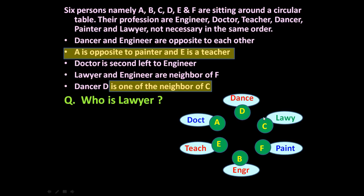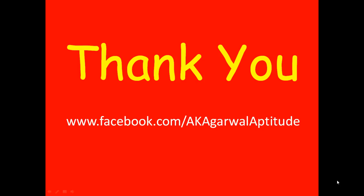The given question is: who is lawyer? It is C. Now friends, once this tabular arrangement is completed, you can answer all related questions — who is sitting opposite to lawyer, which is teacher; who surrounds painter, which is engineer and lawyer. So like this, there may be three, four or five questions and once you have this arrangement you can answer them all. Thank you very much for watching this video. You can also follow me on Facebook. Thank you very much.